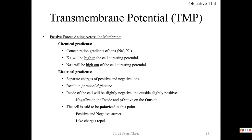With these ions carrying a charge, when we separate their charges, we create a different charge inside and a different charge outside. We call this a potential difference in charge. This basically makes it slightly negative inside and positive outside. We call this a polar charge — the cell is polarized.